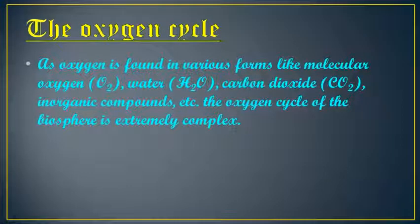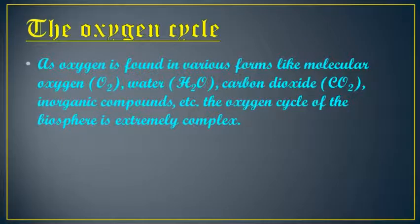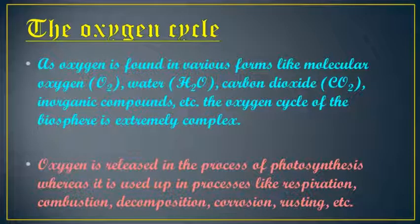Oxygen is found in various forms: molecular oxygen (O2), water (H2O), carbon dioxide (CO2), and inorganic compounds. Inorganic compounds are those which do not have carbon. The oxygen cycle of the biosphere is extremely complex. Oxygen is released in the process of photosynthesis, whereas it is used up in processes like respiration, combustion, decomposition, corrosion, and rusting.